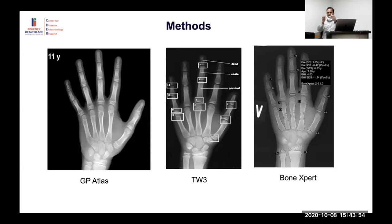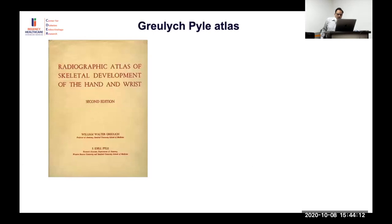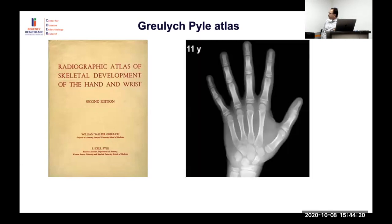The automated Bone Expert software assesses size, shape, and density of each bone and generates a score. The Greulich-Pyle atlas is the oldest, developed on Caucasian children, and involves comparing a radiograph to reference images. For example, finding the closest match between an X-ray and a reference image of age eleven or ten gives the bone age estimate.